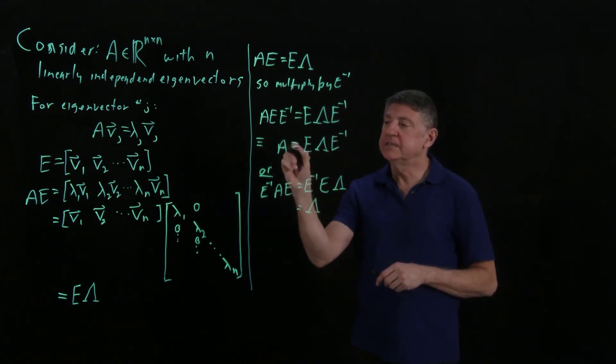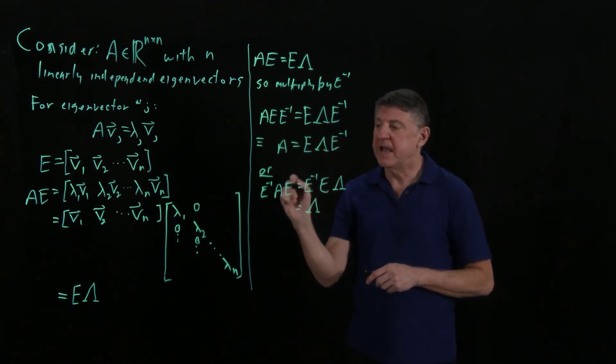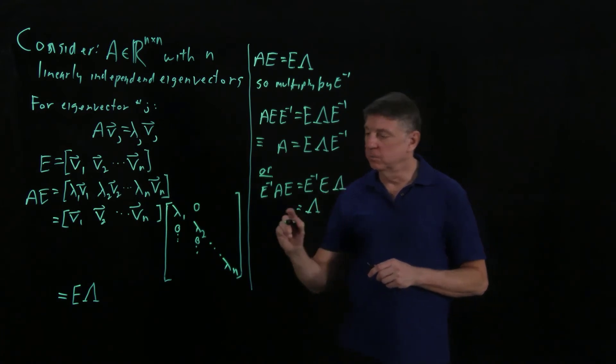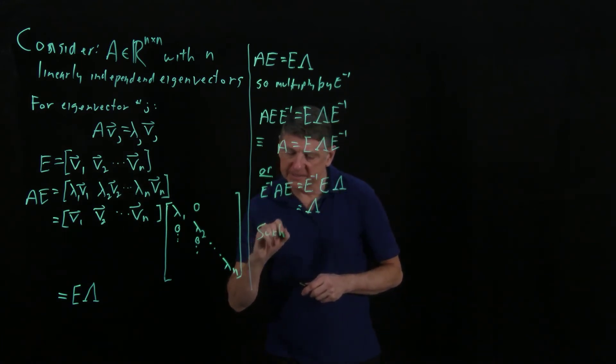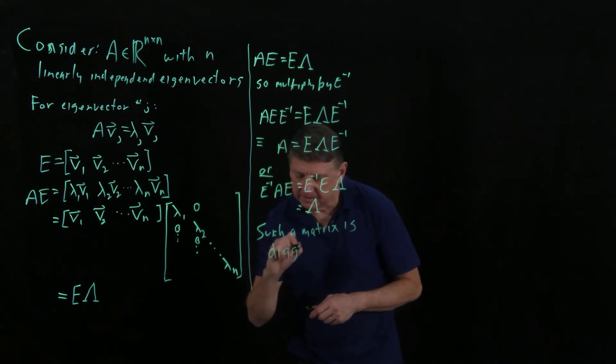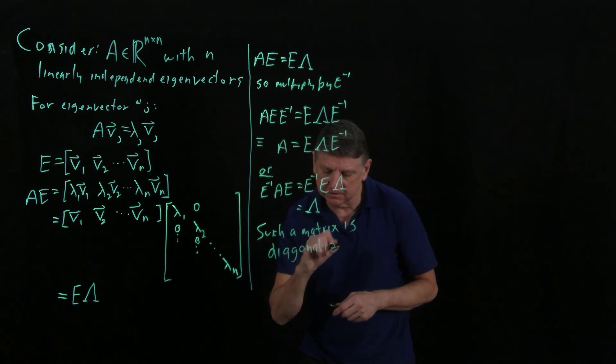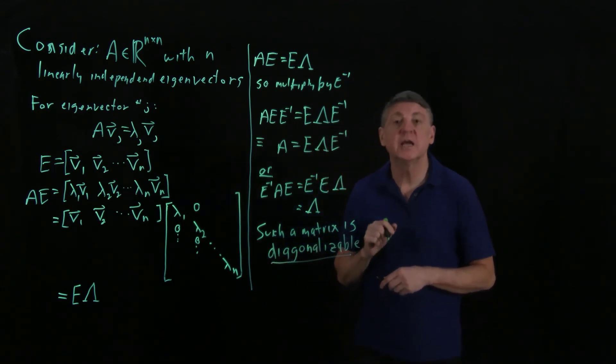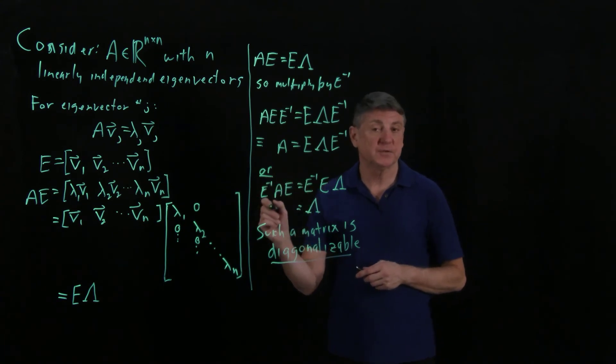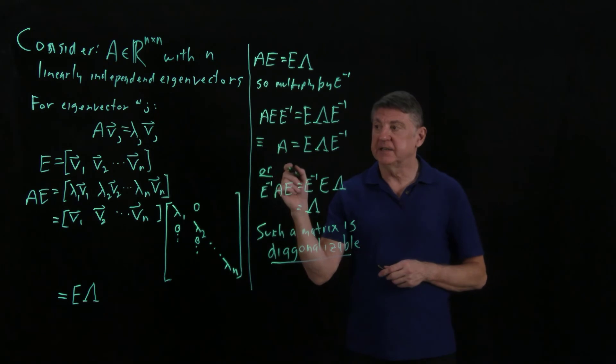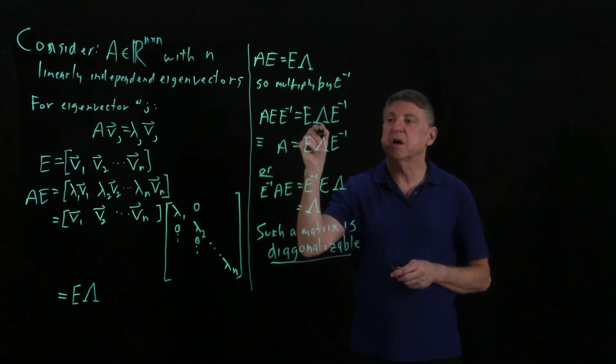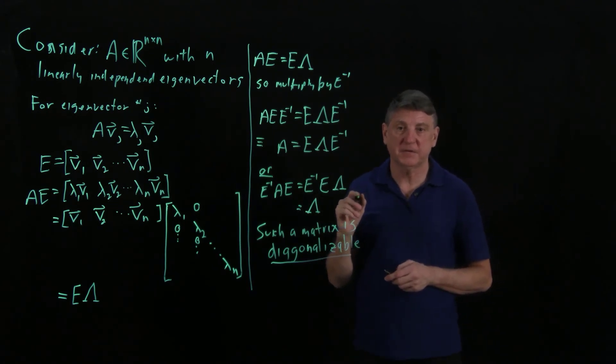So such a matrix is, and the term here is diagonalizable. And that means it can be made into a diagonal matrix, and the specific way we make it into a diagonal matrix is by a similarity transform. That is, we find a matrix such that A is the matrix times the diagonal times the inverse of the transformation matrix.